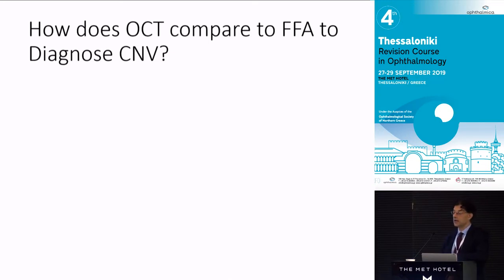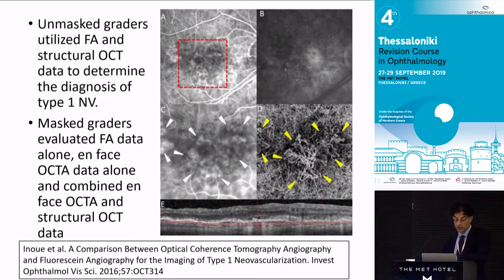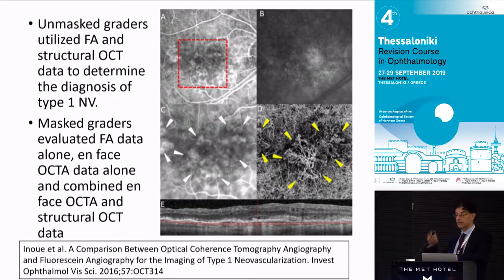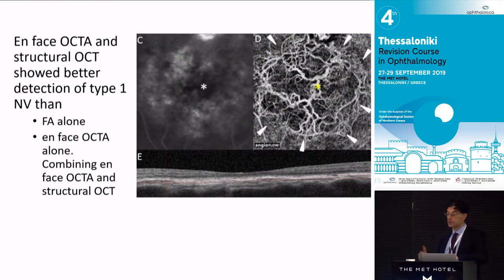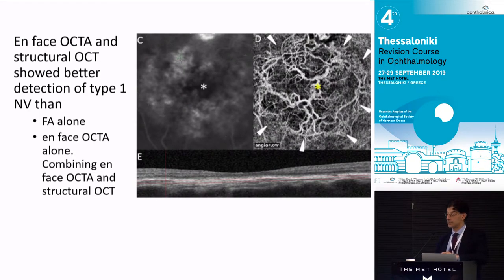Can we use OCT alone — is it as good as fluorescein? There are some reasonable studies. One from Inui and co-workers used a gold standard where graders had fluorescein, structural OCT, and angioCT, asking whether it's CNV or not. They found that OCTA and structural OCT combined was as good at detecting type 1 CNV as fluorescein alone or OCTA alone. A caveat: if you have an untreated type 1, they can have relatively low flow below the signal detection threshold, and you may miss it.